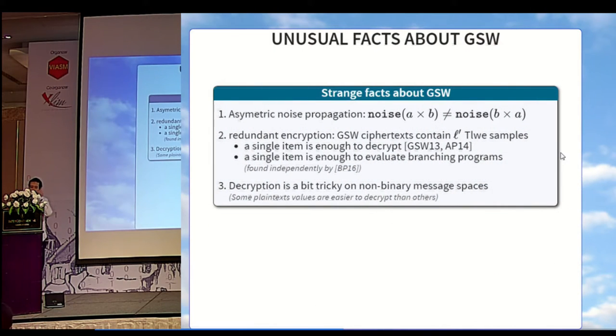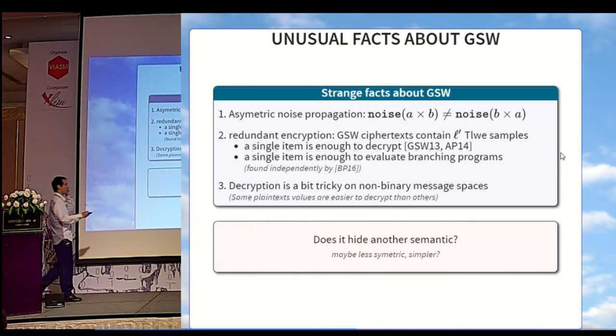There are things that are really strange and unusual about GSW. The first thing is, why is this noise formula asymmetric, although the product itself is symmetric? The second thing is, GSW ciphertext contains L TLWE samples, but a single one of them is enough to decrypt. That is used, for example, in the bootstrapping. And also, something else that we can note is that only one coordinate is enough to evaluate a full branching program. We were advised two weeks ago that this result has been found independently by Brackersky and Perlman in their cryptopapers. The last thing is that decryption of a GSW ciphertext can be really tricky when the message space is non-binary, meaning that some plaintext values are much easier to decrypt than others. So does all of that hide another semantic that would be less symmetric or simpler? And the answer is yes.